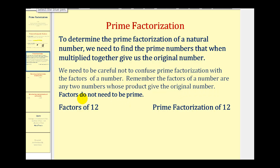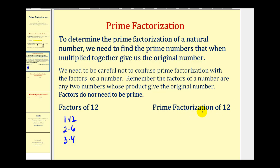For example, the factors of twelve would be one and twelve, two and six, and three and four. But to determine the prime factorization of twelve, we need to figure out what prime numbers give us a product of twelve. The most common way to do this is to make a factor tree.